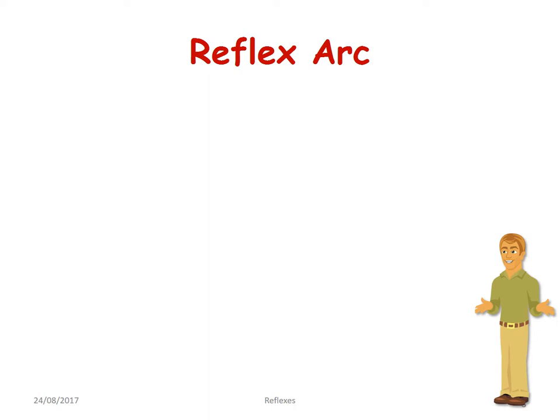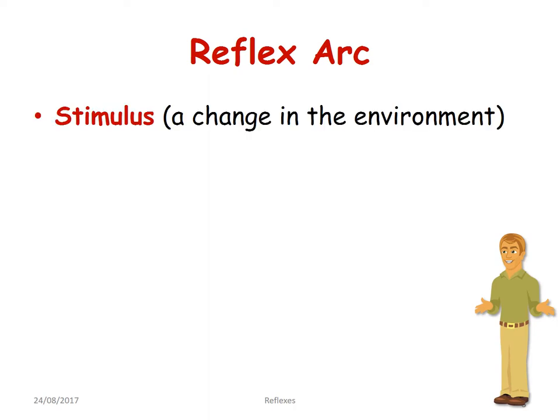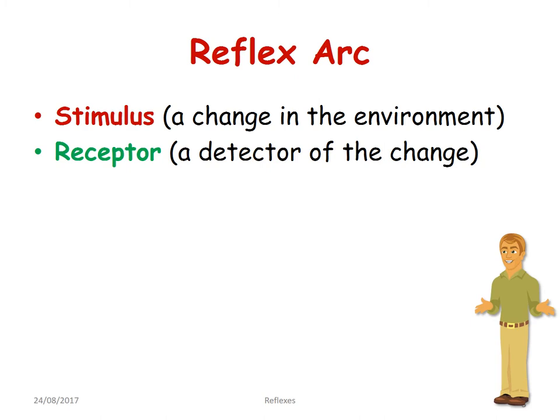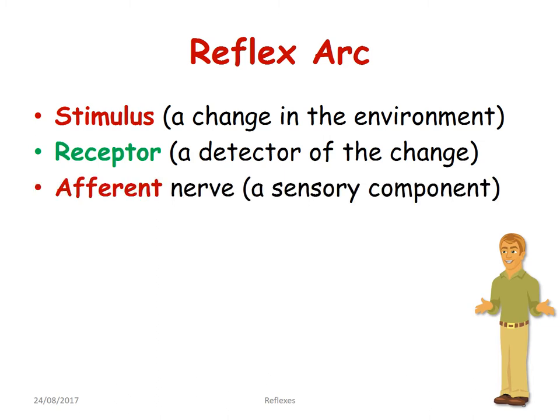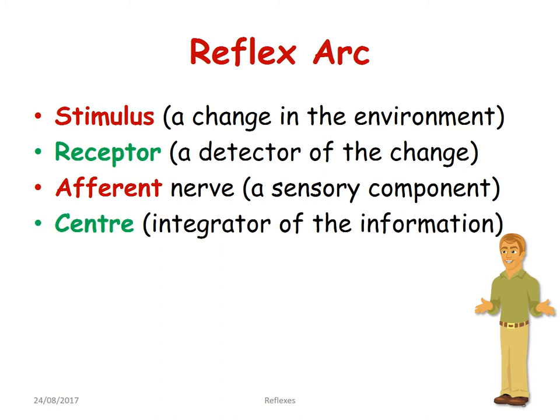For any reflex to take place, we need a reflex arc, and this is made up of seven different components. First and foremost, we need a stimulus, which is a change in the environment. To detect this, we need a receptor, which is a detector for the change that is the stimulus. This information needs to be carried along the sensory component, which is the afferent nerve, and related to the center which will be the integrator of the information.